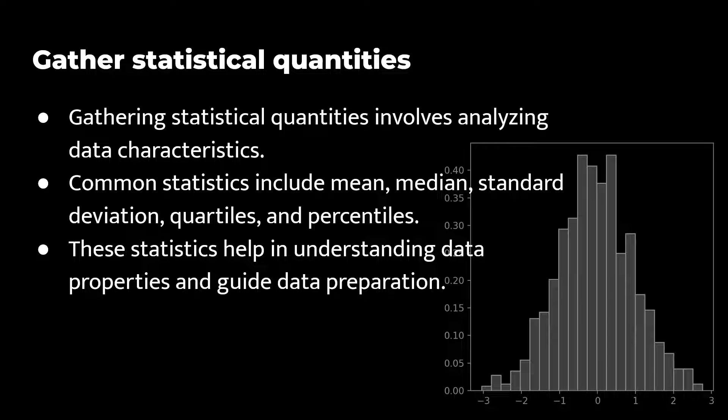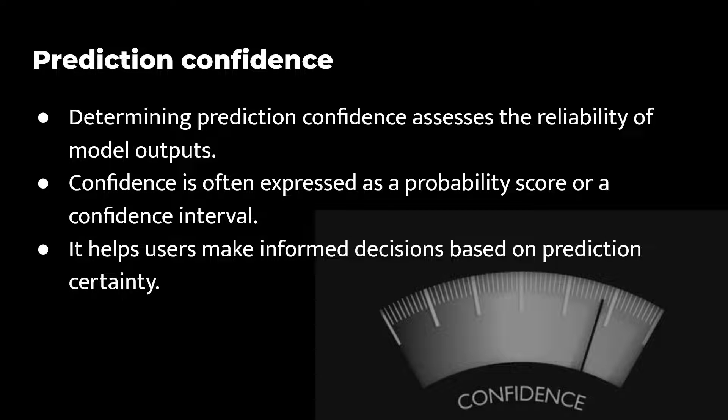Gathering statistical quantities refers to the process of collecting and analyzing various statistics, or numerical characteristics of a data set to better understand its properties. And finally, determining prediction confidence is the process of assessing how certain or uncertain a machine learning model is about its predictions. In many machine learning models, predictions are accompanied by a measure of confidence or uncertainty, often in the form of a probability score or a confidence interval. The prediction confidence helps users or decision makers understand the reliability of the model's output.